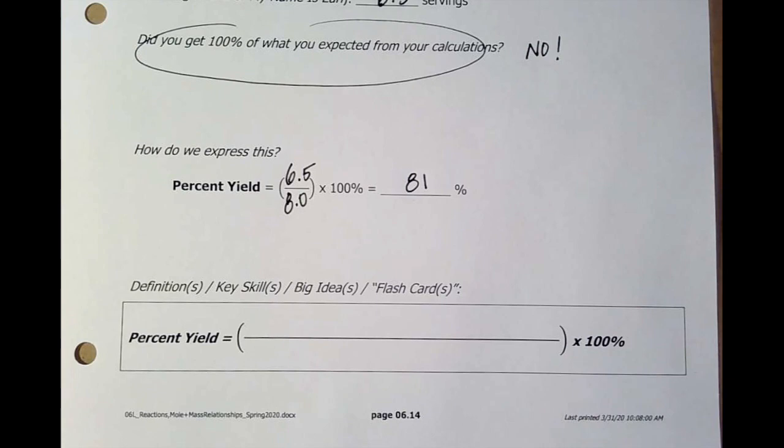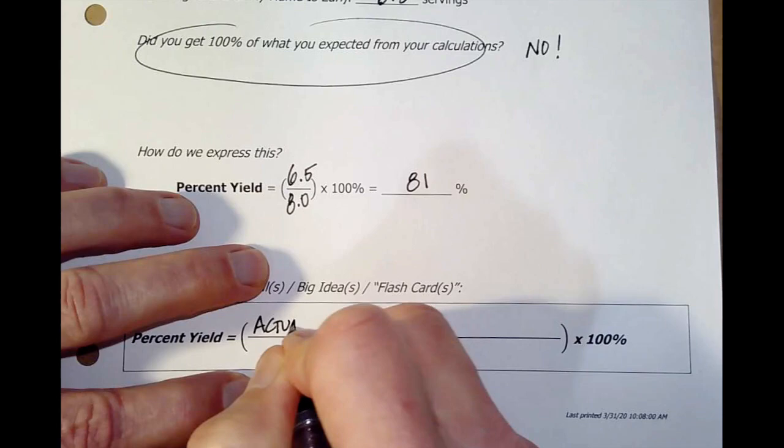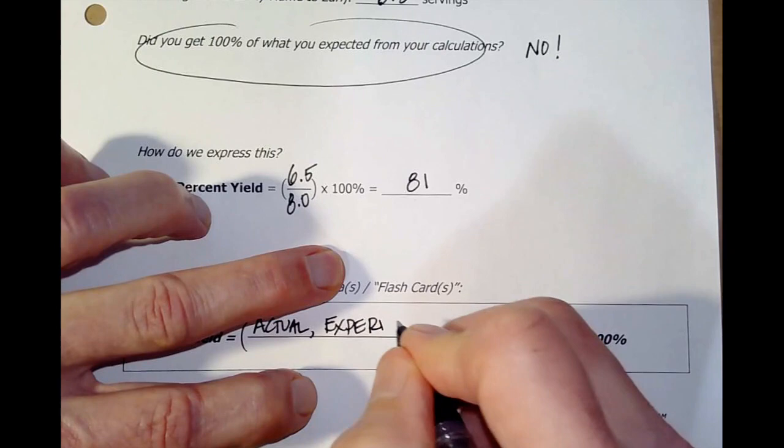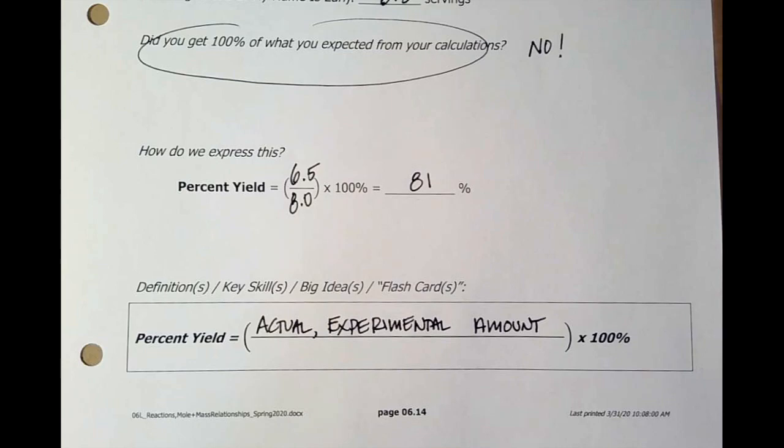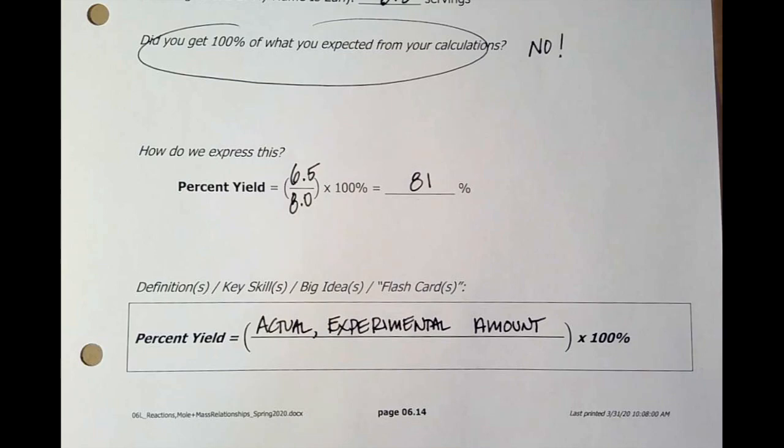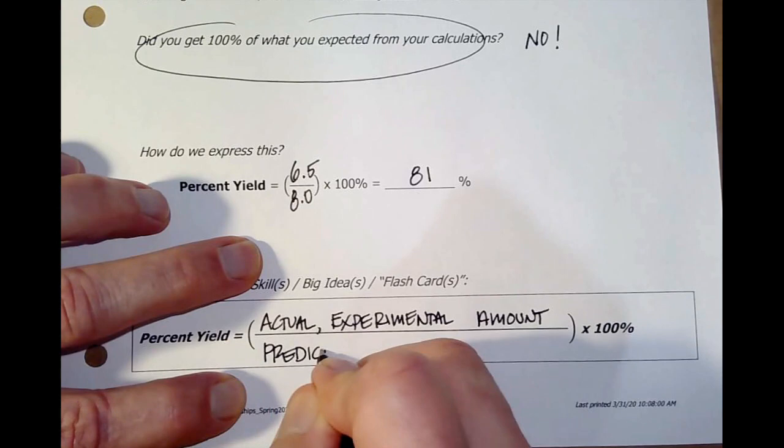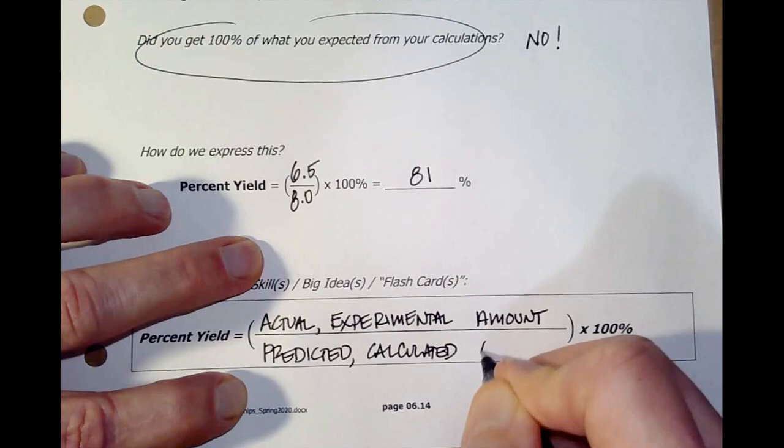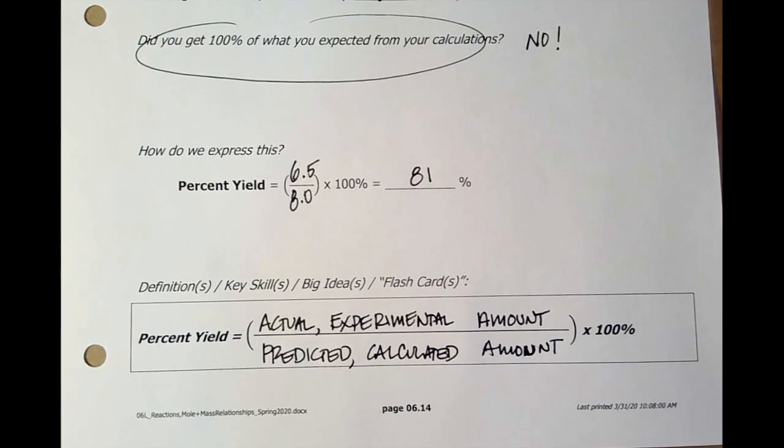Well, so did you get 100%? No. And you never, ever do. It never works out perfectly like that. So how are we going to express that? How are we going to say, I didn't get eight, I only got six and a half? Well, we're going to do it like this. We're going to put the 6.5 on top, the 8.0 on the bottom, and convert it to a percentage. When I do that, I get 81%. So what we would say is, I had the milk and cereal. I expected eight bowls, eight servings, but I only got 81% of what I expected.